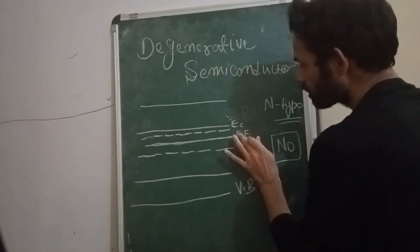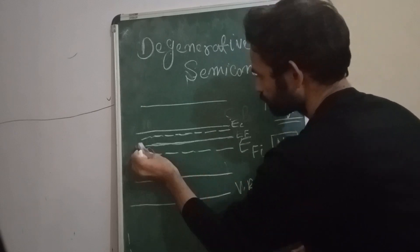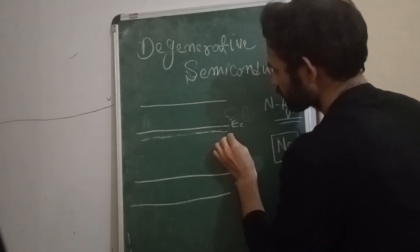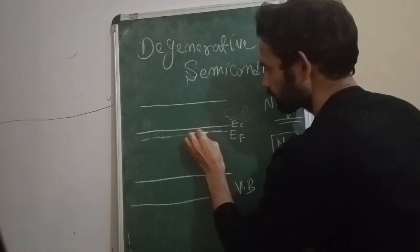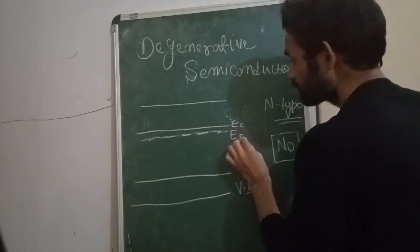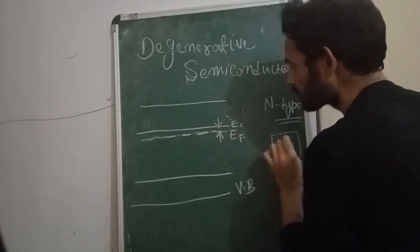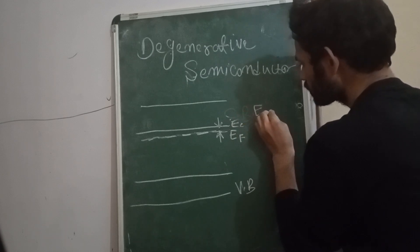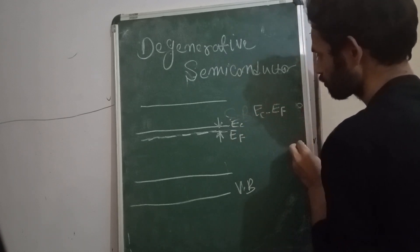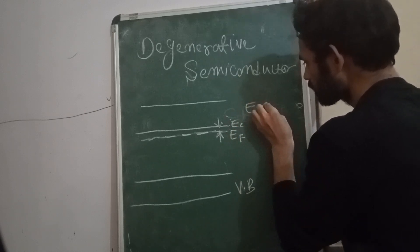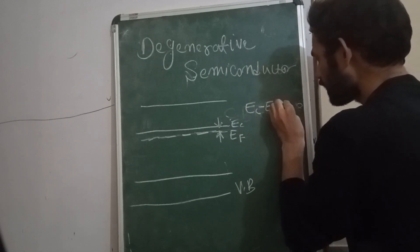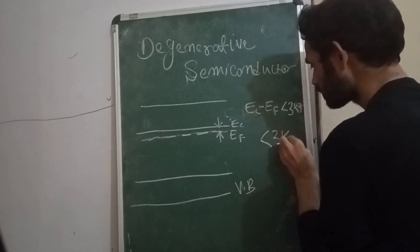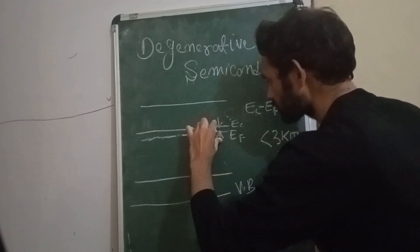If this Fermi energy level goes up to the level EF, and the gap EC minus EF is less than 3kT, then we can say this semiconductor is non-degenerative.